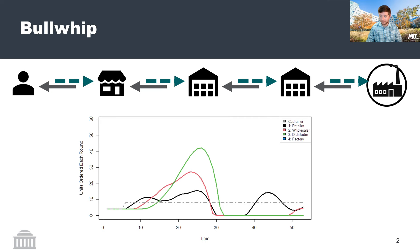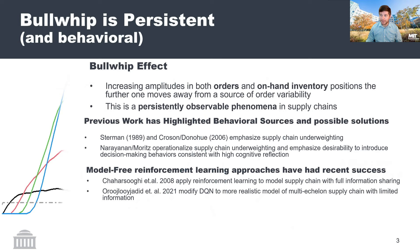One thing I find interesting about bullwhip is that we're still talking about it. It's persistent, and a good body of research implies it's highly behavioral. Sterman's 1989 paper introduces concepts around supply chain underweighting. More recent papers from 2015 examined individuals in the context of cognitive reflection as a model for how individuals make orders in multi-echelon supply chains. There have also been model-free reinforcement learning approaches from 2008 and decision support systems, and more recently in MSOM in 2021, a modified DQN network was used in this space.